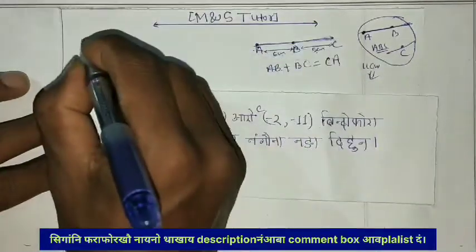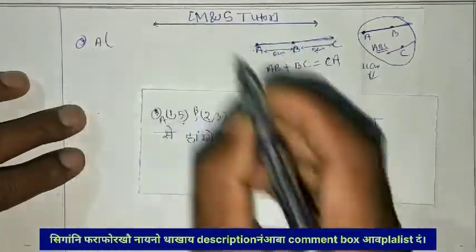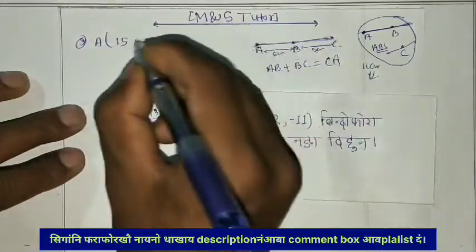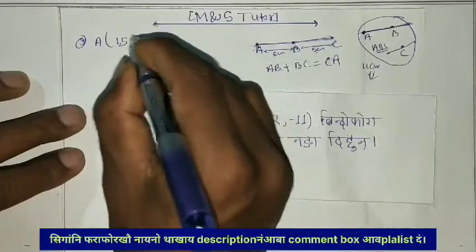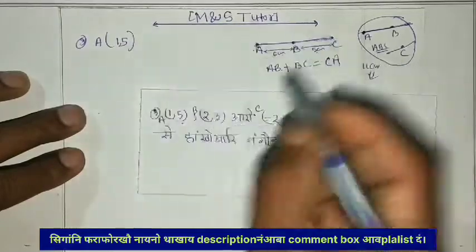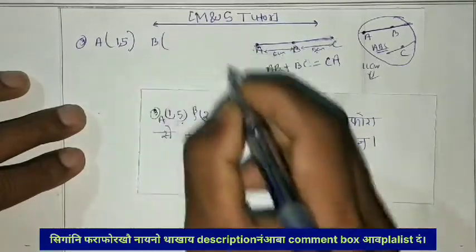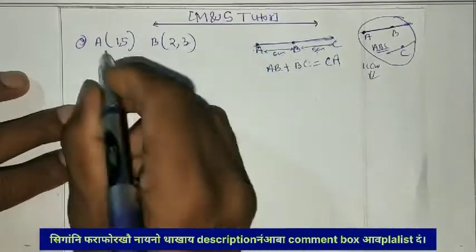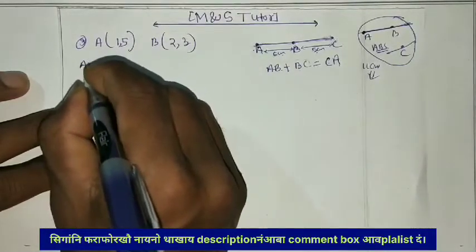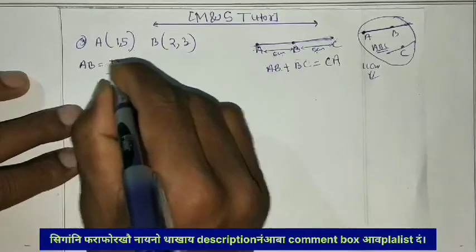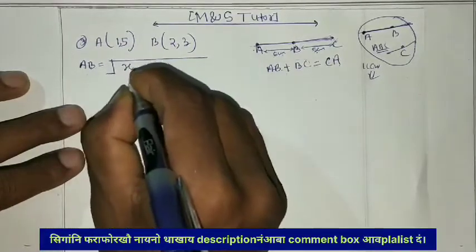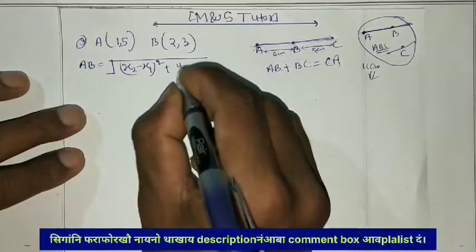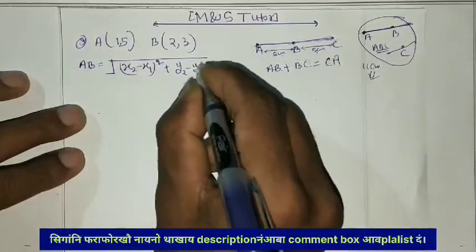You can see AB: the points are (1,5) and AB is (2,3). AB is equal to x2 minus x1 whole square plus y2 minus y1 whole square, under square root.